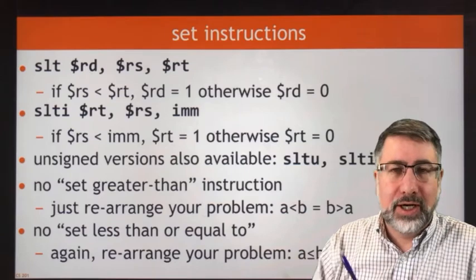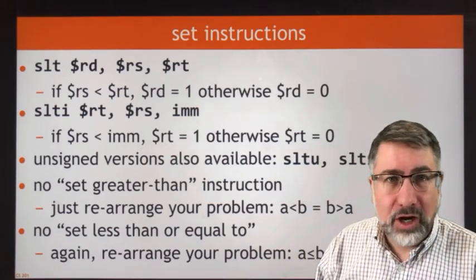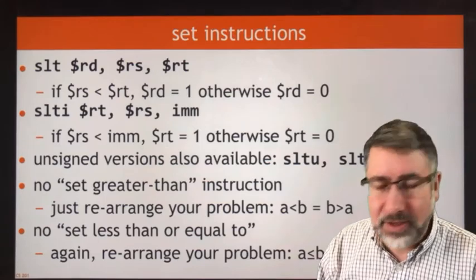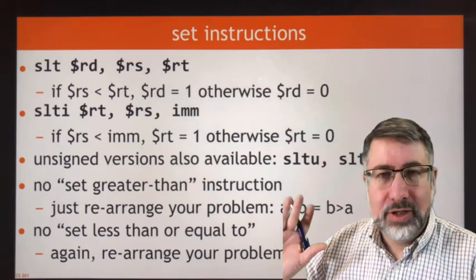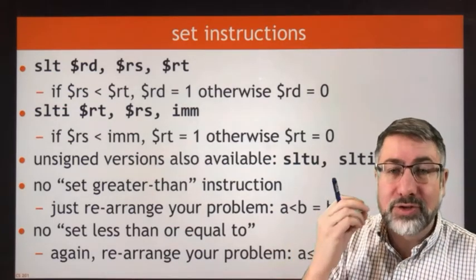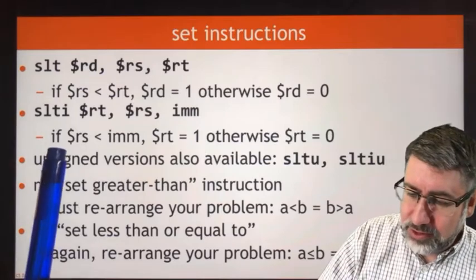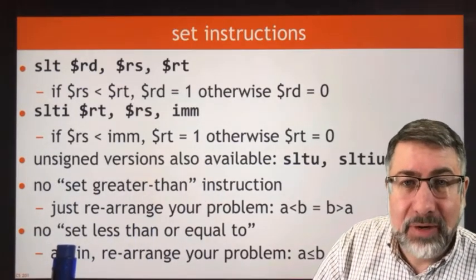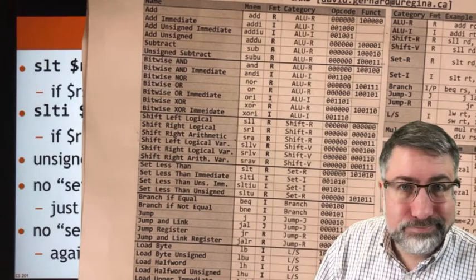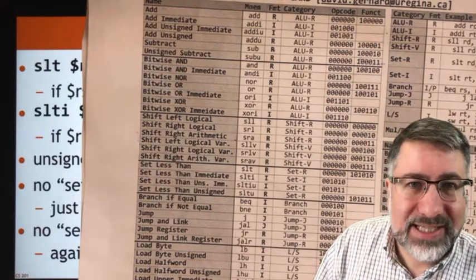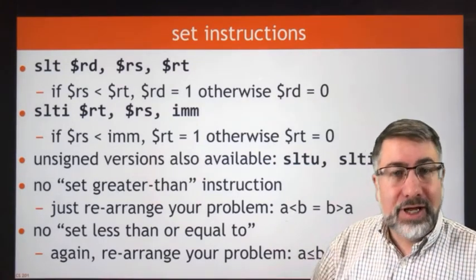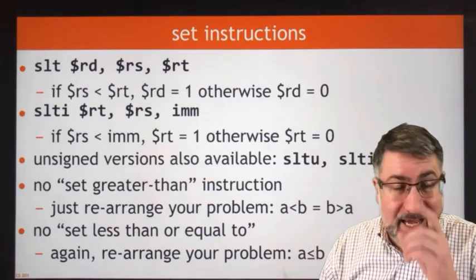That's how we're going to do most of our general purpose branching instructions. The set instructions are fairly simple: a destination register is set to either one or zero based on the comparison of the two other registers provided. It's an R-format instruction — we ignore the shift amount. The destination register is the result of comparing RS and RT, either a one or a zero. We have signed and unsigned versions. We have set less than, set less than immediate, and set less than immediate unsigned. That allows us to cover both less than and greater-than-or-equal if you use the opposite condition.